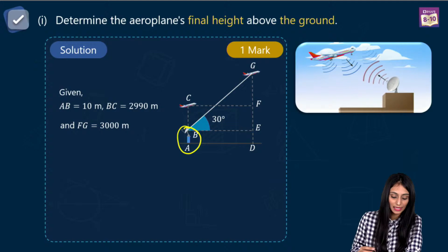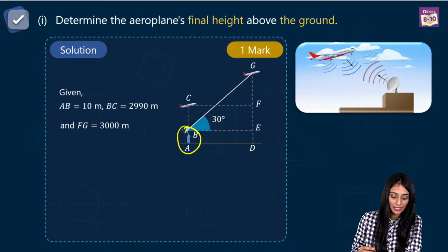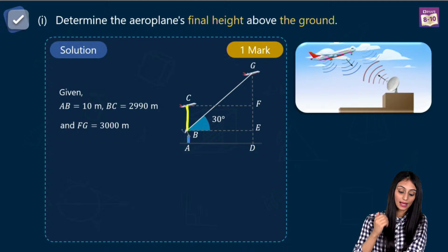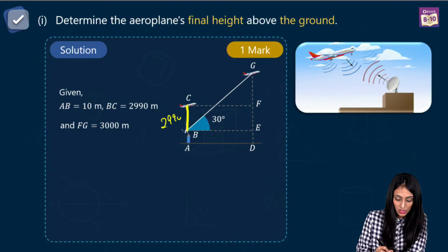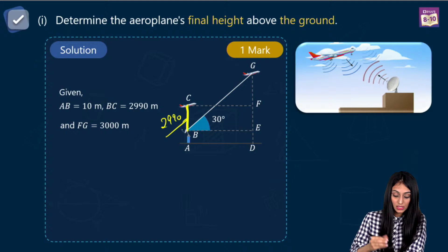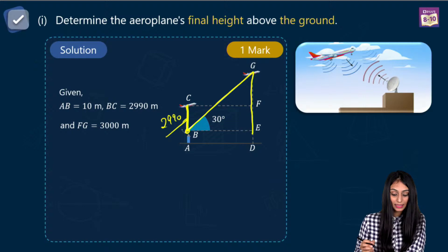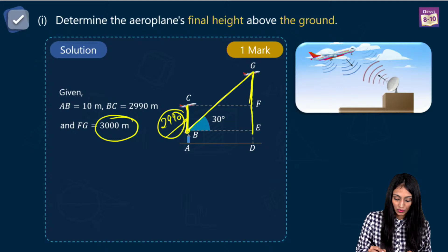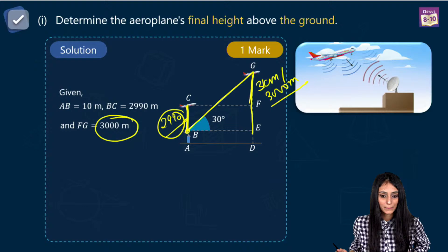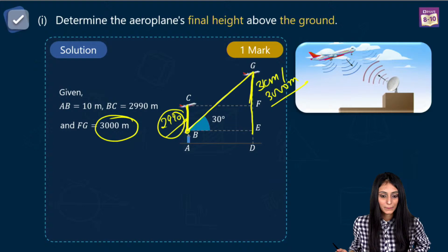In the figure, the radar is here, the plane was just above it at 10 meters distance. BC is 2,990 meters when the plane was just above the radar. After some time, when we see the plane from the radar, it makes an angle of elevation of 30 degrees, and the height has increased by 3 kilometers, which is 3,000 meters.